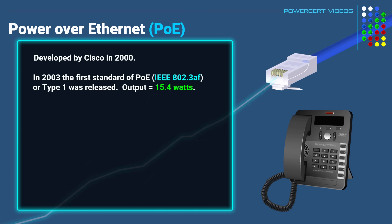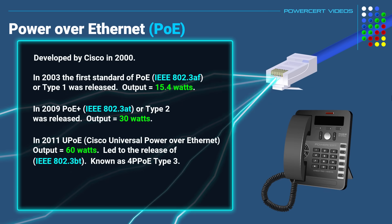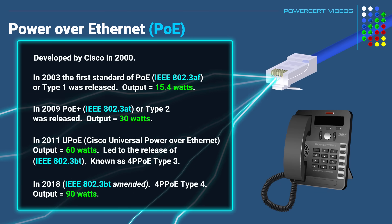As technology progressed, engineers realized the potential of this technology and created newer standards to supply power to more power-hungry devices. In 2009, the IEEE 802.3at standard, or Type 2 — also known as PoE+ — was released, doubling the power output to 30 watts. In 2011, that power was doubled again to 60 watts when Cisco came out with their own proprietary standard called Cisco Universal Power over Ethernet. This led to the release of the IEEE 802.3bt standard, or Type 3, also known as 4-Pair Power over Ethernet, which utilized all four pairs of wires. In 2018, the 802.3bt standard was amended with a power output of 90 watts — enough to even power a laptop computer.